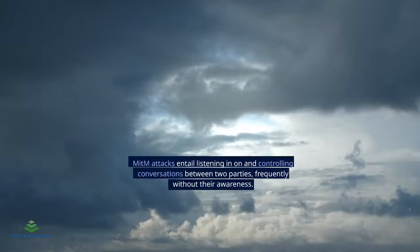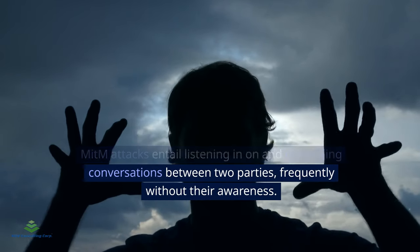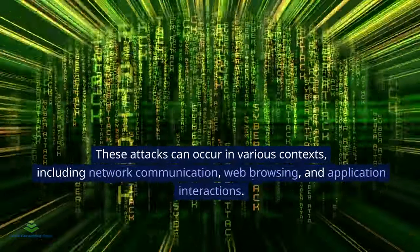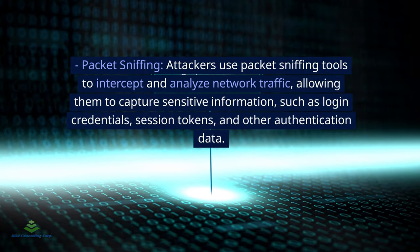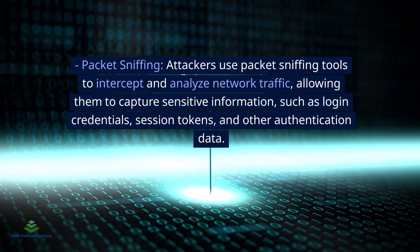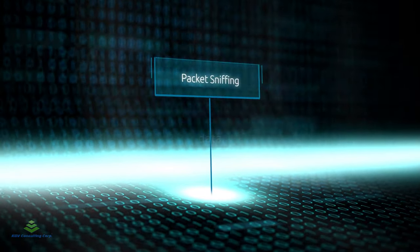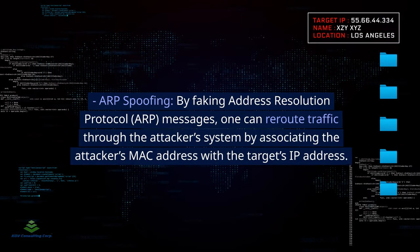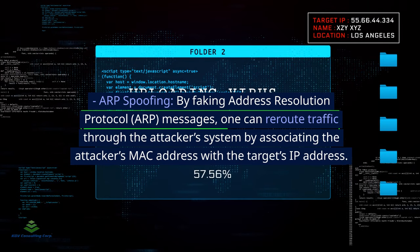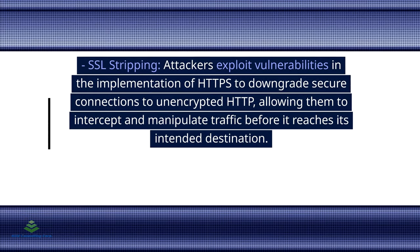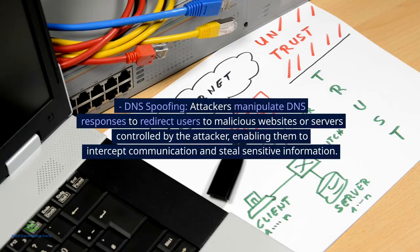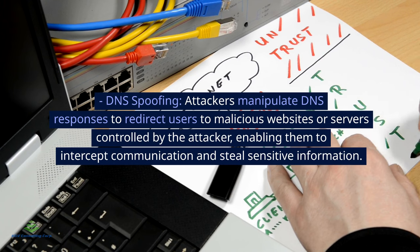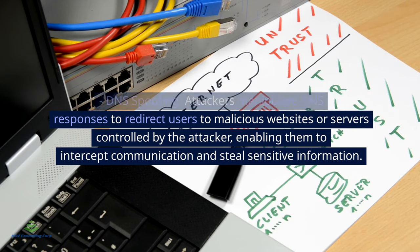Man-in-the-Middle (MITM) attacks entail intercepting and controlling communications between two parties, frequently without their awareness. These attacks can occur in various contexts including network communication, web browsing, and application interactions. Techniques include packet sniffing to capture sensitive information such as login credentials and session tokens; ARP spoofing, which reroutes traffic through the attacker's system by associating the attacker's MAC address with the target's IP address; SSL stripping, which downgrades secure HTTPS connections to unencrypted HTTP; and DNS spoofing, which redirects users to malicious websites to intercept communication and steal sensitive information.